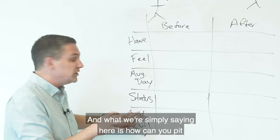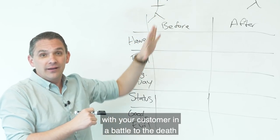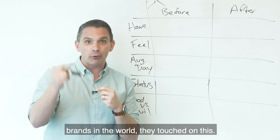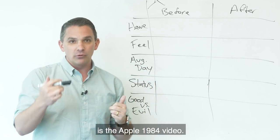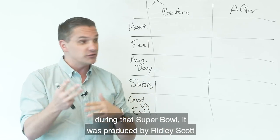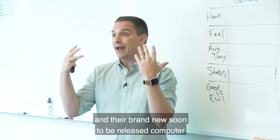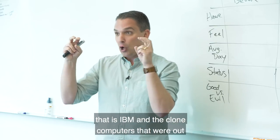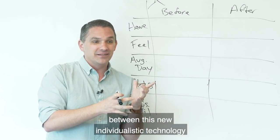And what we're simply saying here is how can you pit your product and align your product, your service with your customer in a battle to the death between good versus evil. Now, this sounds really bold and this sounds really extreme, but if you think about some of the biggest brands in the world, they touched on this. Another video that I would maybe encourage you to watch after the Chatbooks video is the Apple 1984 video. This was a commercial that ran during the 1984 Super Bowl. It was a commercial that ran only once during that Super Bowl. It was produced by Ridley Scott. And it absolutely positions Apple and their brand new, soon-to-be-released computer, the Macintosh, in this fight between the evil that is IBM and the clone computers that were out at the time, between this new individualistic technology that was going to be the Macintosh.